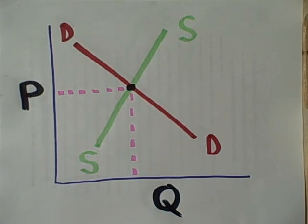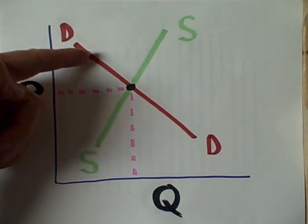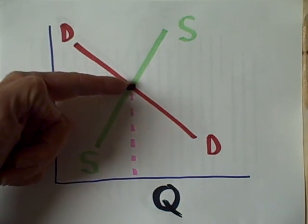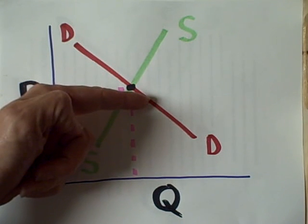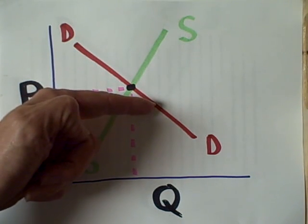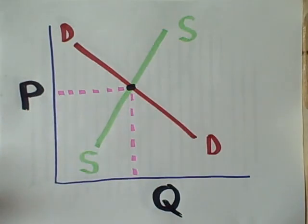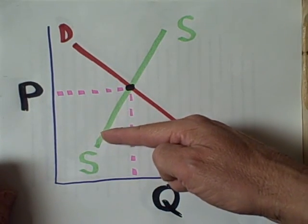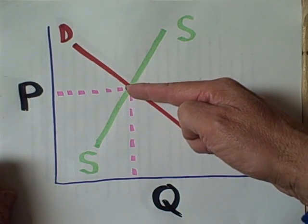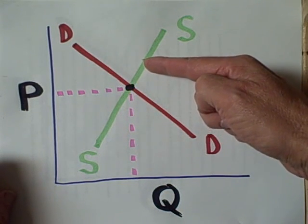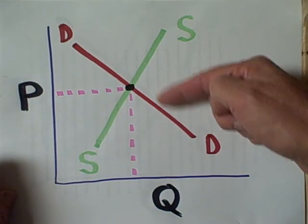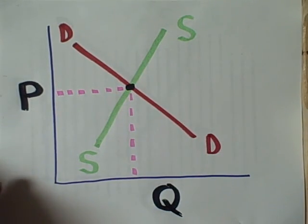In this particular diagram, if we move in this direction, what we're indicating is the price has gone down and the quantity demanded has increased. If we move up on this supply curve, we're showing that as price increases, the quantity supply increases.